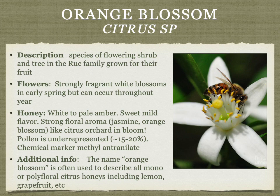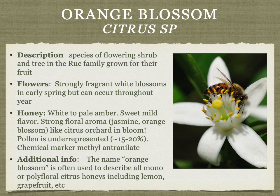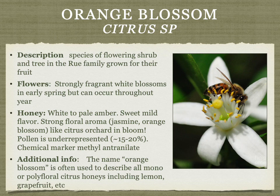Orange blossom is one of the classic varietal honeys — it basically smells and tastes like a citrus orchard in bloom, with a strong floral aroma like orange blossoms. This name is often used to describe all citrus honeys, whether mono or polyfloral. Other monofloral citrus honeys exist, such as lemon blossom, which has some more lemon notes. There can also be differences in orange blossom honey depending on whether it came from Florida, California, or Mexico — trying different sources is recommended.